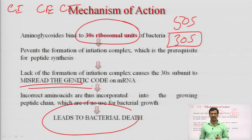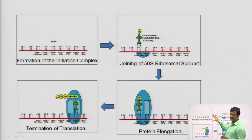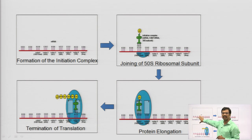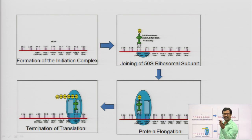To summarize the mechanism: aminoglycoside binds to the 30S ribosome, prevents initiation complex formation, causes misreading of the genetic code, resulting in non-functional protein formation and inhibition of bacterial growth leading to bacterial death. This diagram illustrates what was mentioned — it can inhibit the formation of the initiation complex.